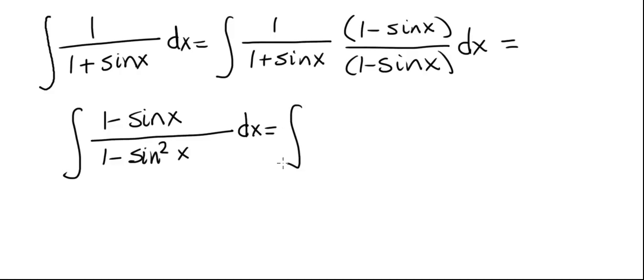Of course, 1 minus sine squared x, by using the trig identity, that's cosine squared x.